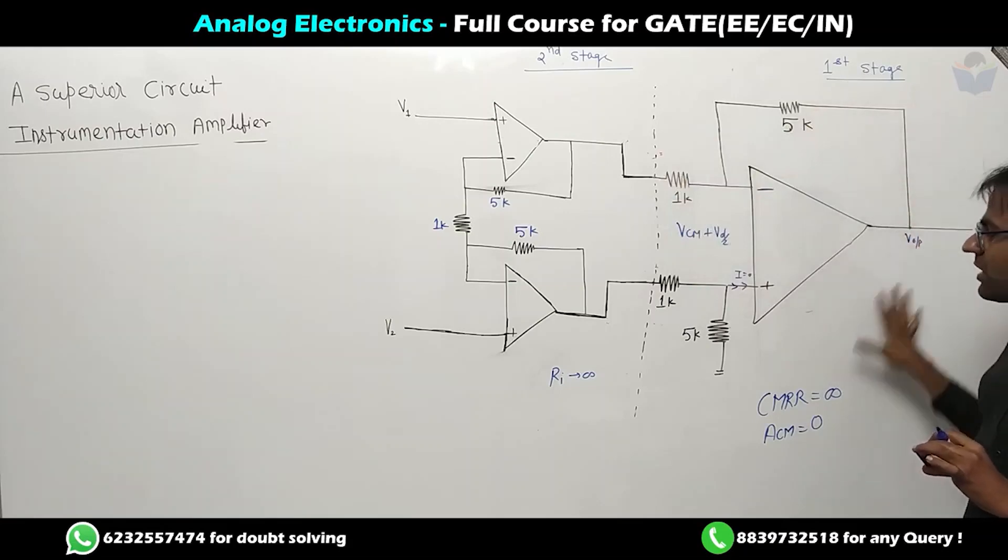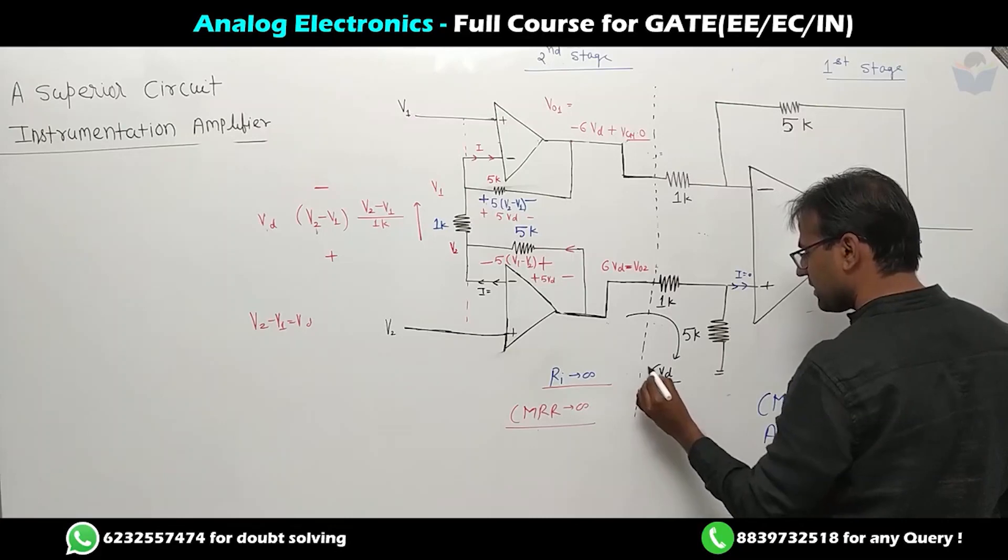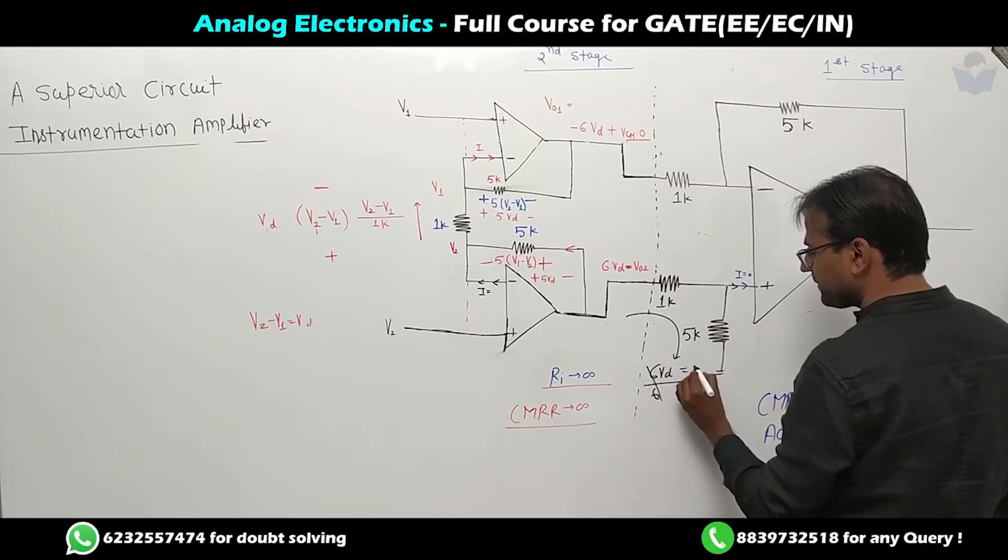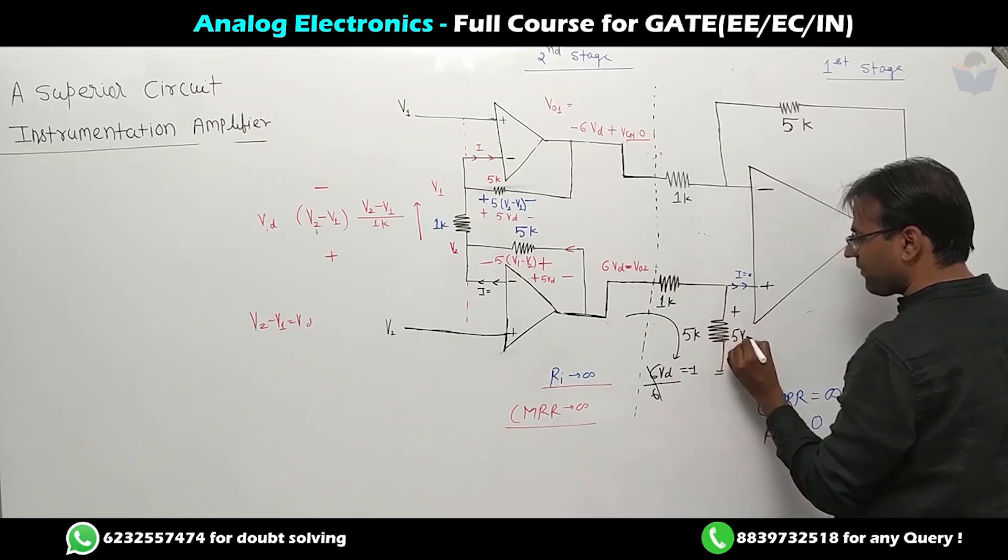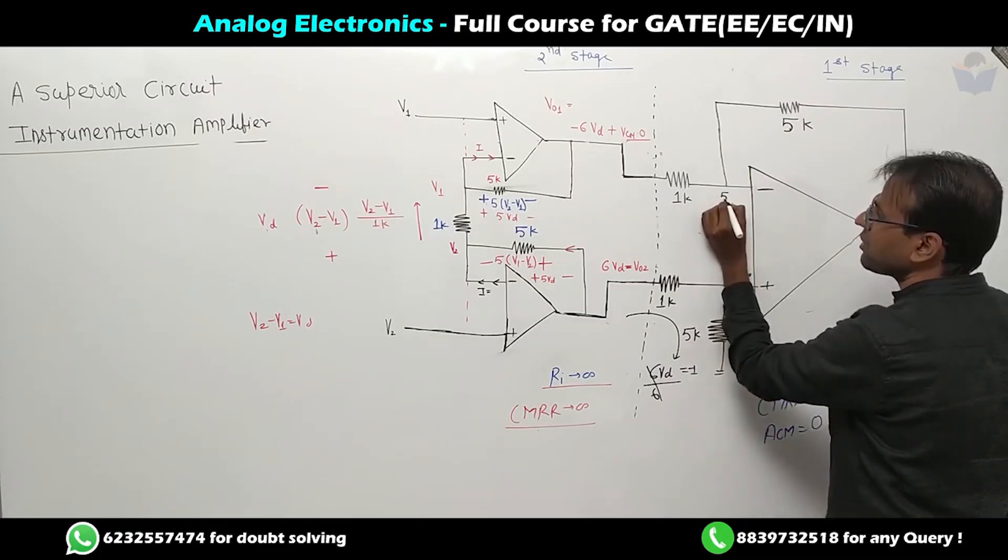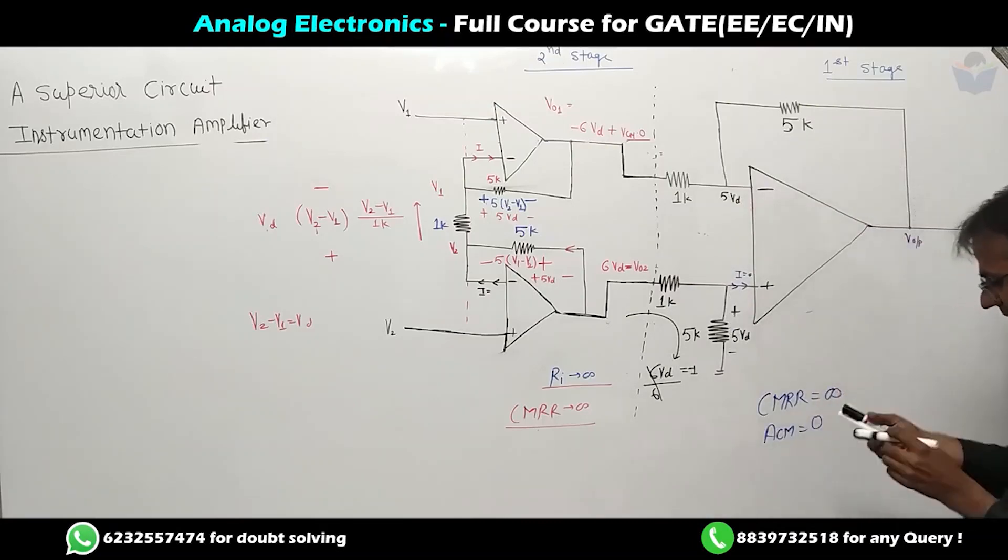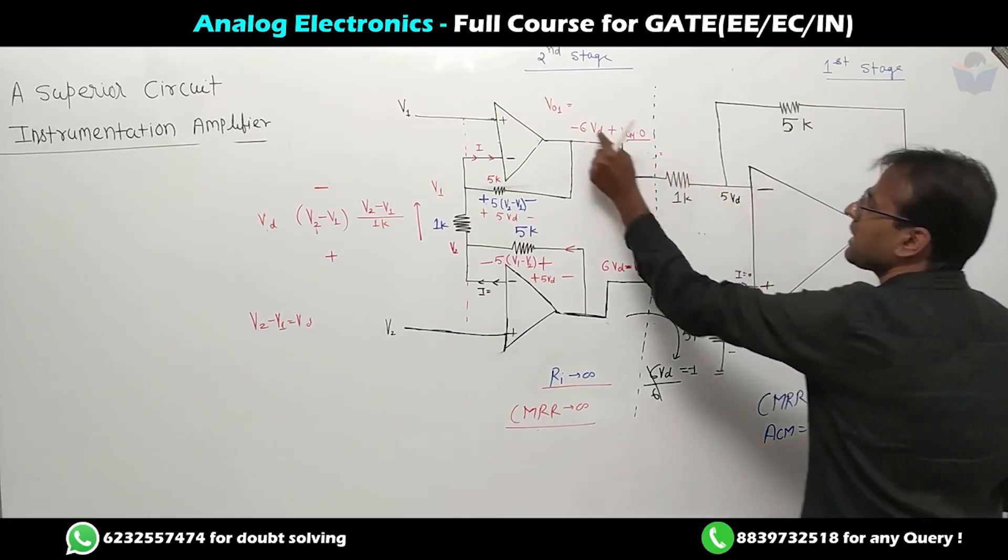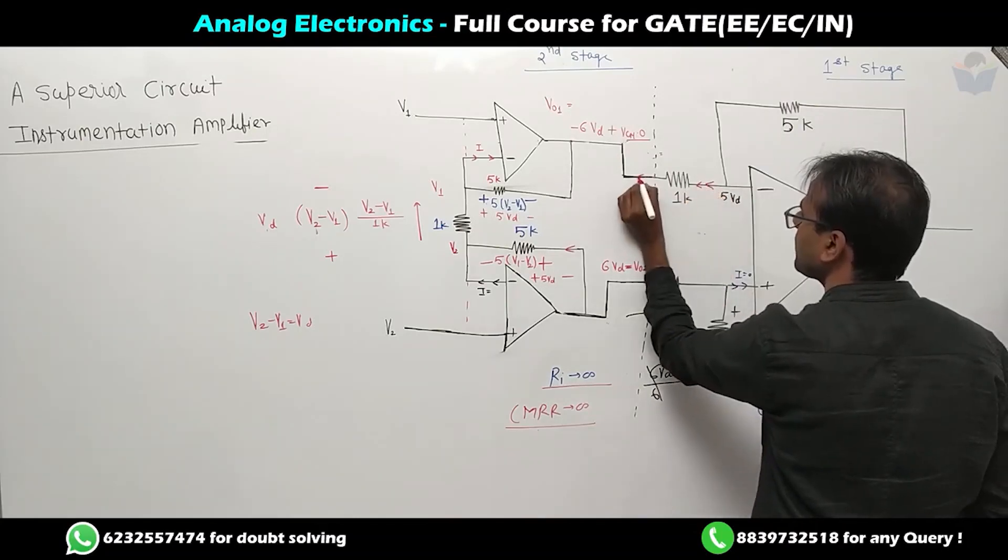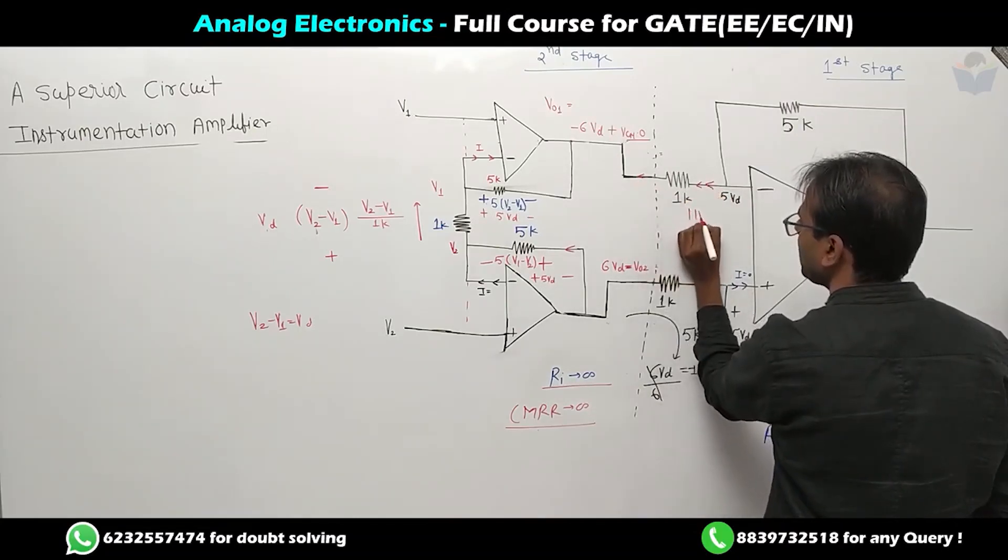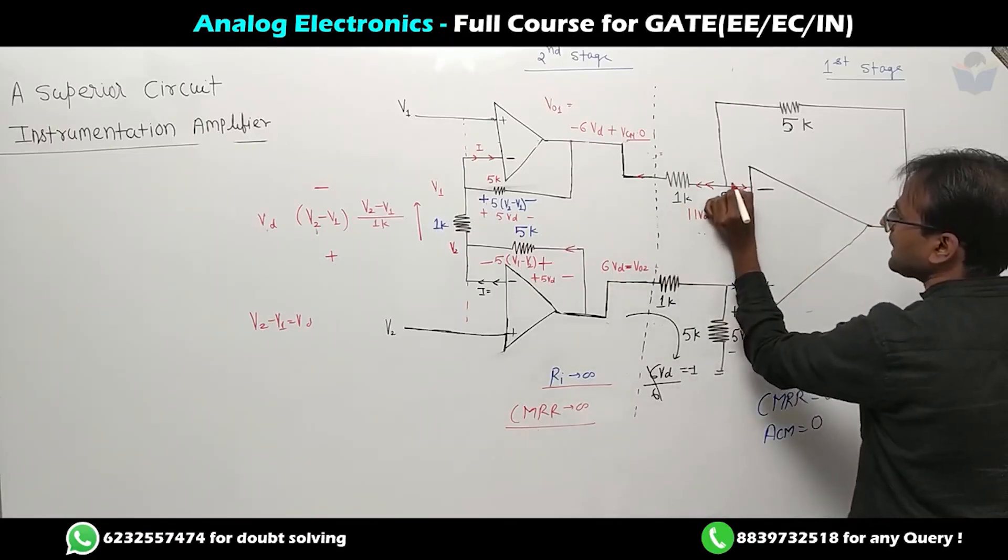We get plus 6VD and we get VD. So the potential drop here will be 5VD. Now if we see that one terminal's potential is 5VD and one is minus 6VD, then the current direction will be this way. Current will be 11 times VD. And the op-amp will neither accept current nor throw current.